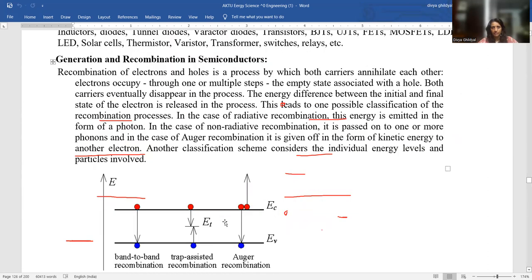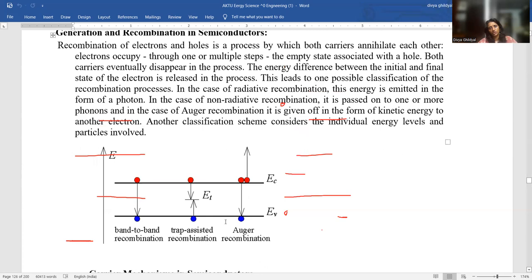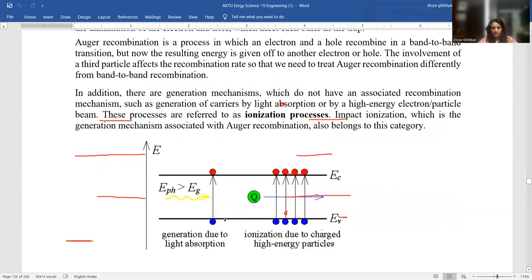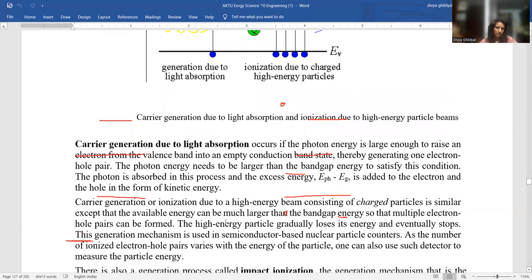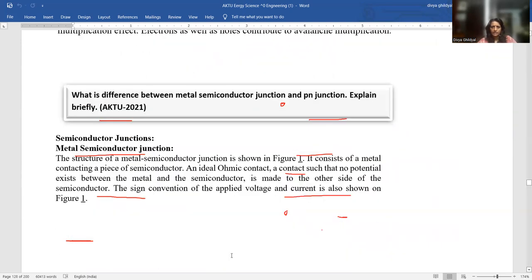Generation and recombination in semiconductors. Recombination of electrons and holes is a process by which both carriers annihilate each other and electrons occupy through one complete or multiple steps the empty state that is associated with the hole. Carrier mechanism in semiconductors: carrier generation due to light. Light absorption occurs if the photon energy is large enough to raise an electron from the valence band into an empty conduction band, thereby generating one electron hole pair. The photon energy needs to be larger than the band gap energy to satisfy this condition. The photon is absorbed in this process and the excess energy is added to the electron.